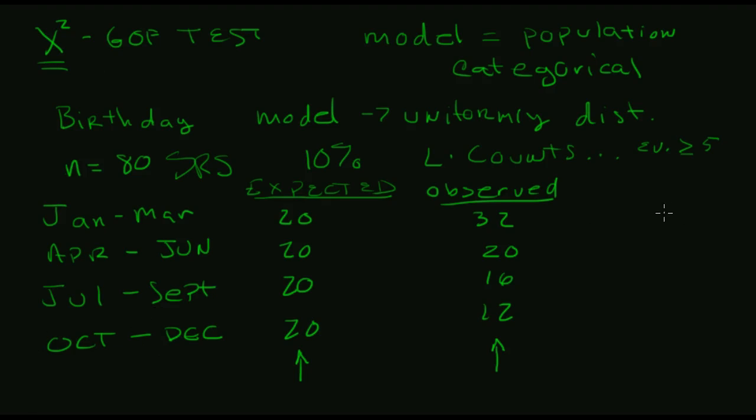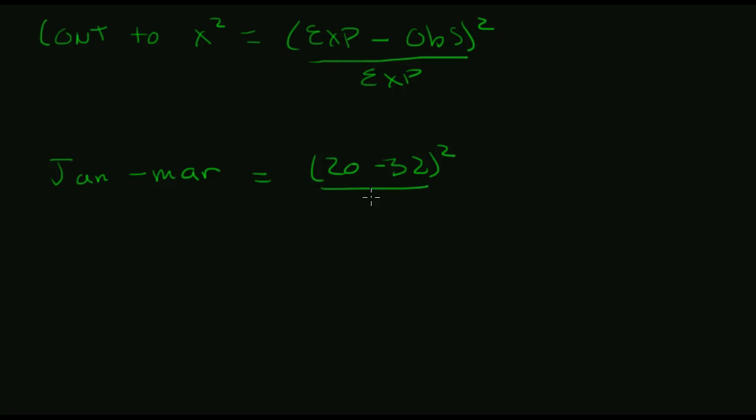And what chi-squared does is it creates what we call contributions. So contributions are, the contribution to the chi-squared number is the expected value minus the observed value squared over the expected value. So looking at just January to March, my expected value for that was 20. My observed value was 32 squared over the expected value, so the expected value, again, was 20.